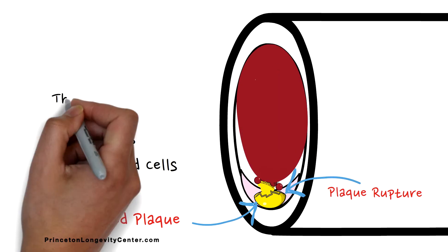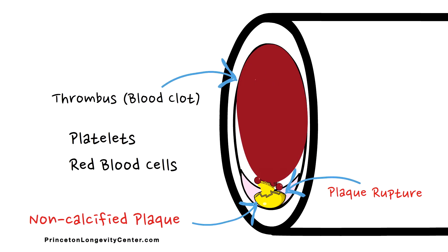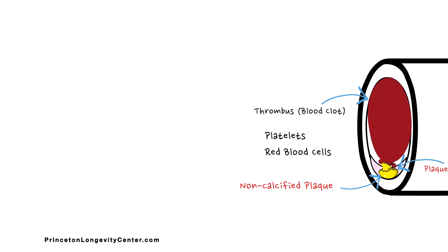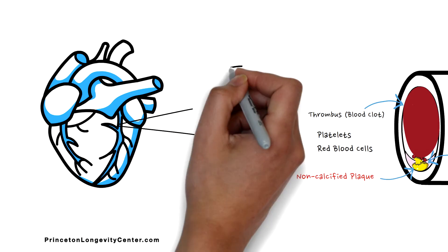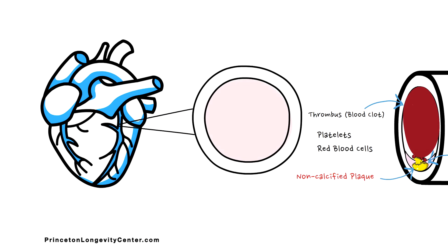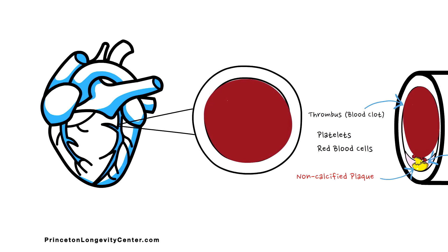Pretty quickly, this process continues, and the thrombus occludes or blocks the entire vessel. Once a vessel is totally blocked, heart muscle begins to die rather quickly. And, depending on where this blockage occurs, that's what will determine the size of the heart attack.